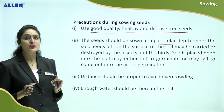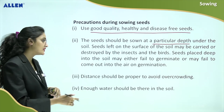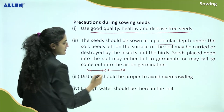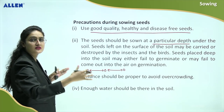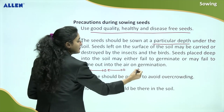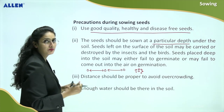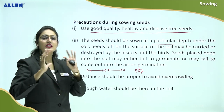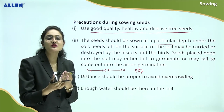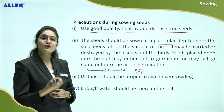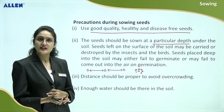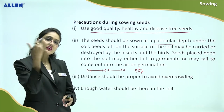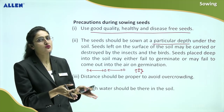Next: distance should be proper to avoid overcrowding. We have to sow seeds at a proper distance from each other. Otherwise, if you sow seeds all in one place, there will be overcrowding — those seeds will all germinate in the same spot and the seedlings will collect there. As a result, those plantlets will face competition for space, for water, and for sunlight. That is why we must maintain proper distance between seeds so that there is no competition between the plants.